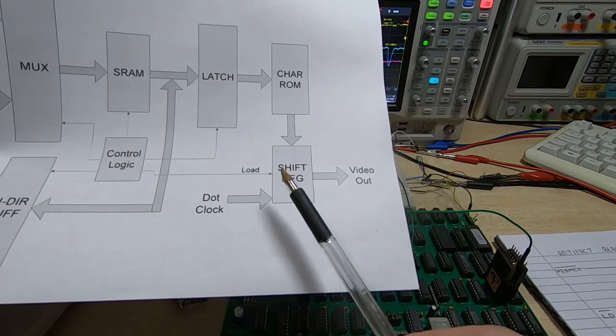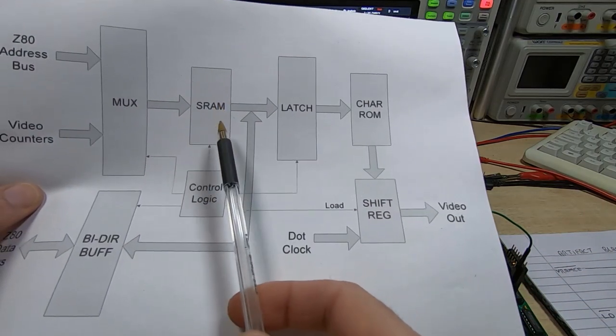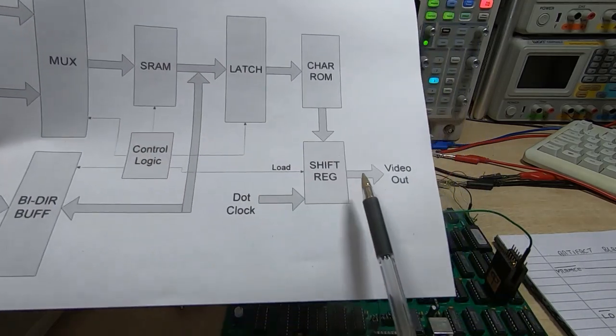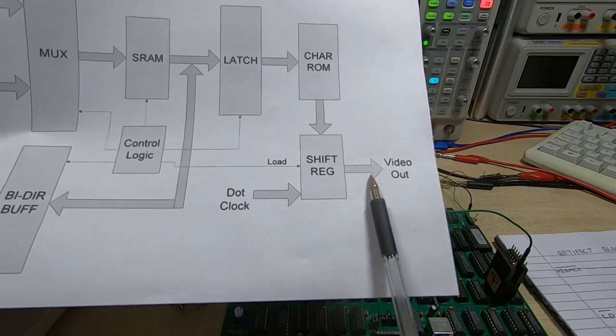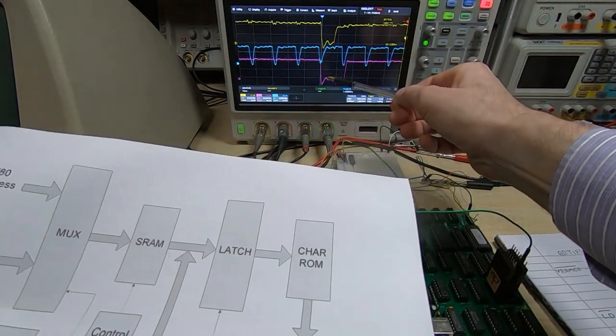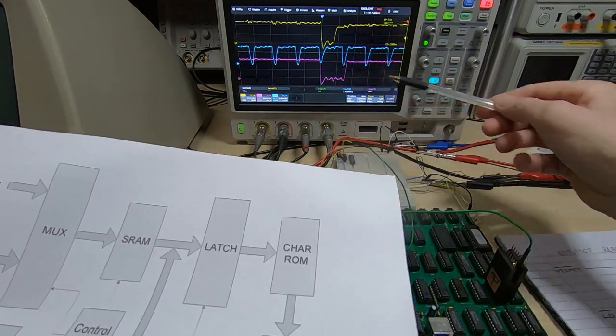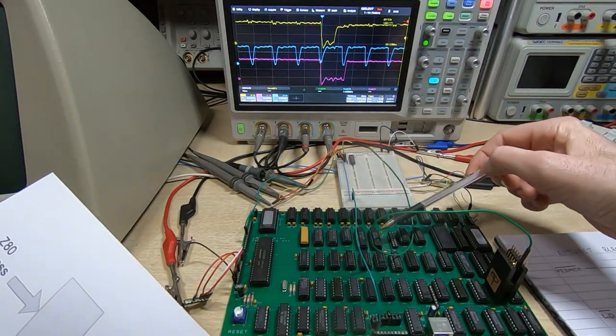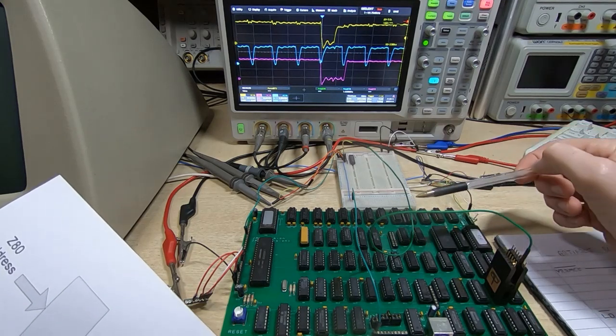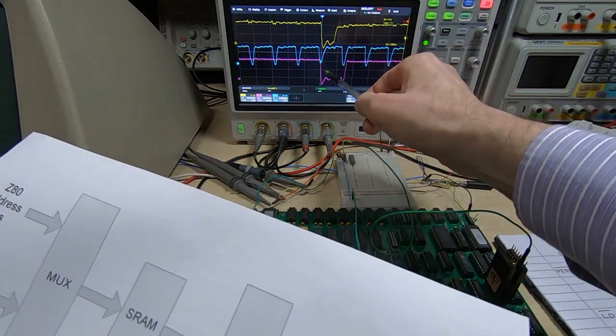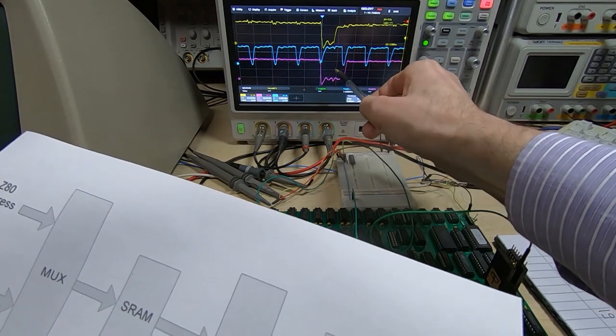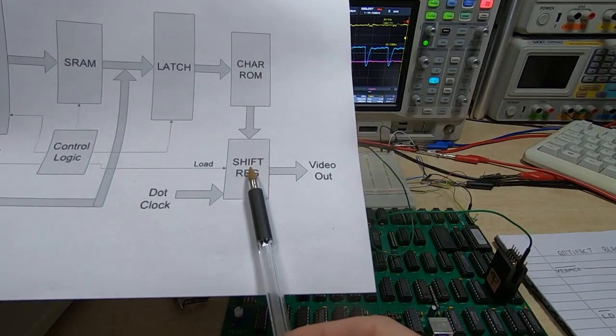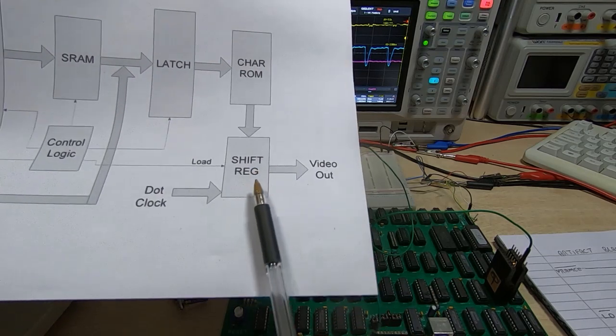What we can do is make use of the load feature. Whenever the Z80 tries to access the SRAM by either read or write instruction, we want to immediately start blanking the video out. As you can see, that's what happened - the bottom purple trace is the blanking signal coming out of this circuit, fed through into the video blanking part of the video mixer circuit.